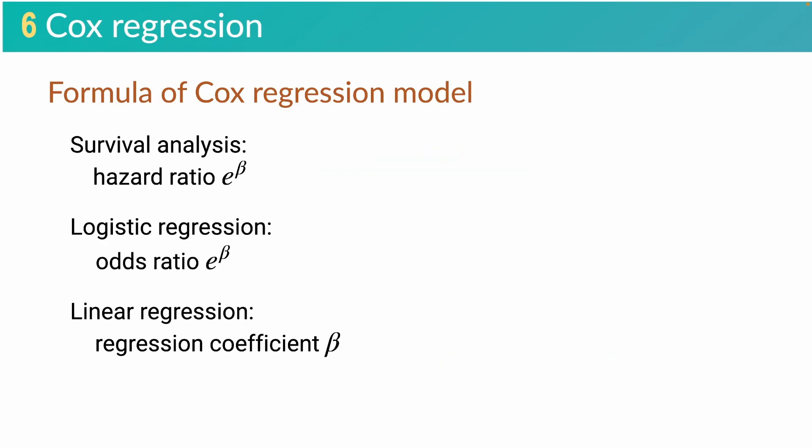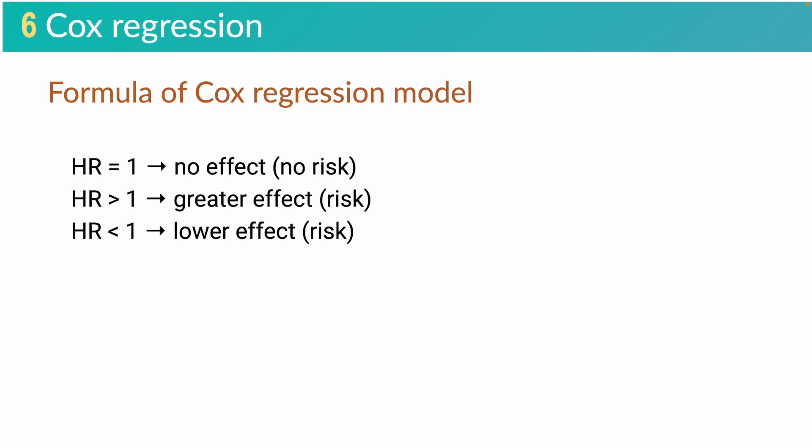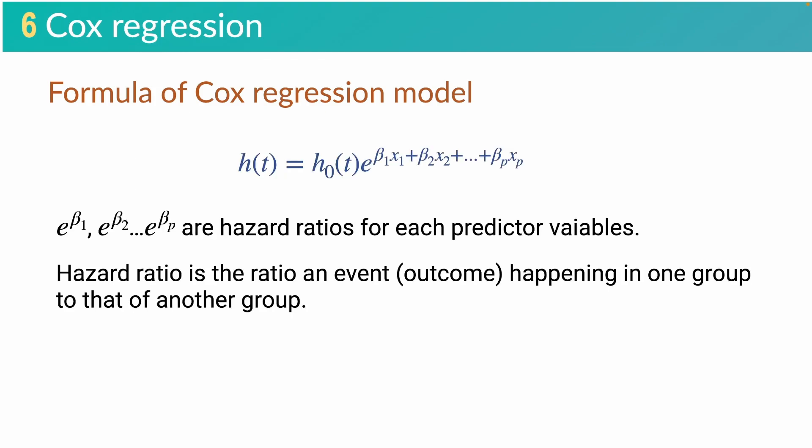So we can say hazard ratio describes the effect of a predictor variable on the outcome — that is, the hazard rate in this case. It is similar to the odds ratio in logistic regression and the regression coefficient in linear regression. In general, similar to odds ratio: if hazard ratio equals 1, there is no effect or risk of the predictor variable on the outcome. When hazard ratio is greater than 1, it shows greater risk in the treatment group compared to the control group. While if the hazard ratio is smaller than 1, the treatment group shows less risk than the control group. Cox regression in survival analysis aims to estimate the hazard ratio for predictor variables of interest.